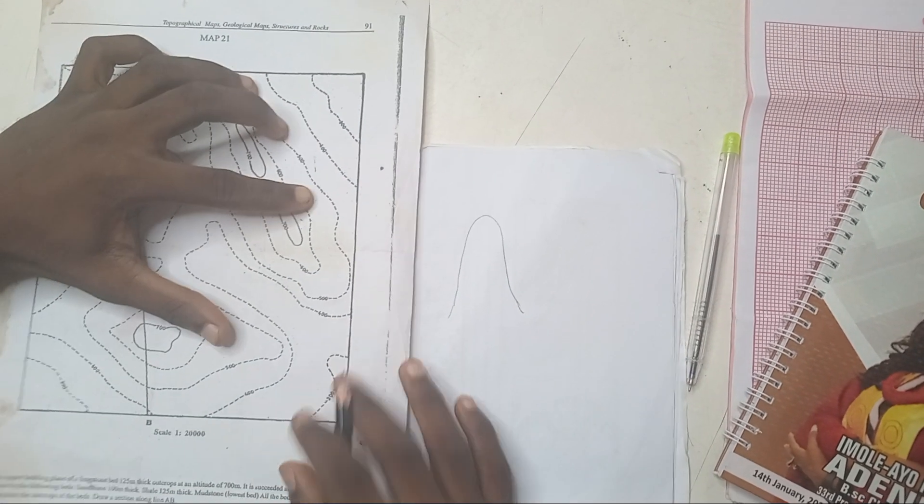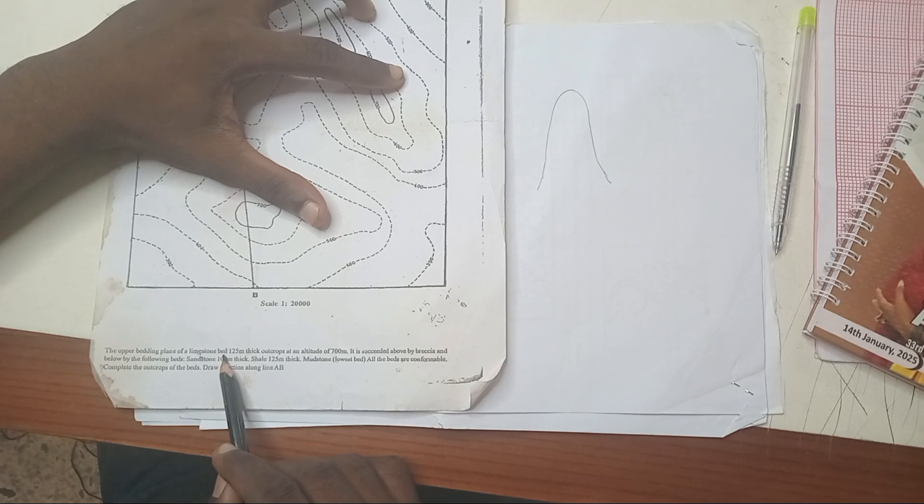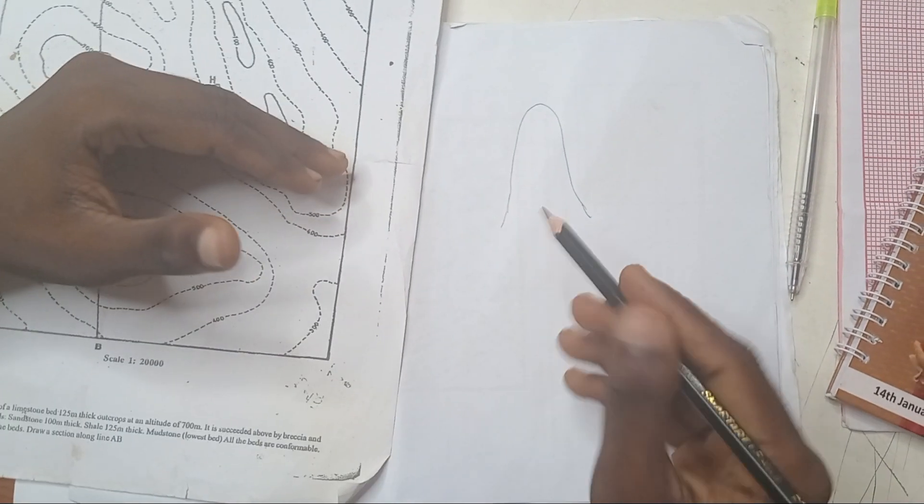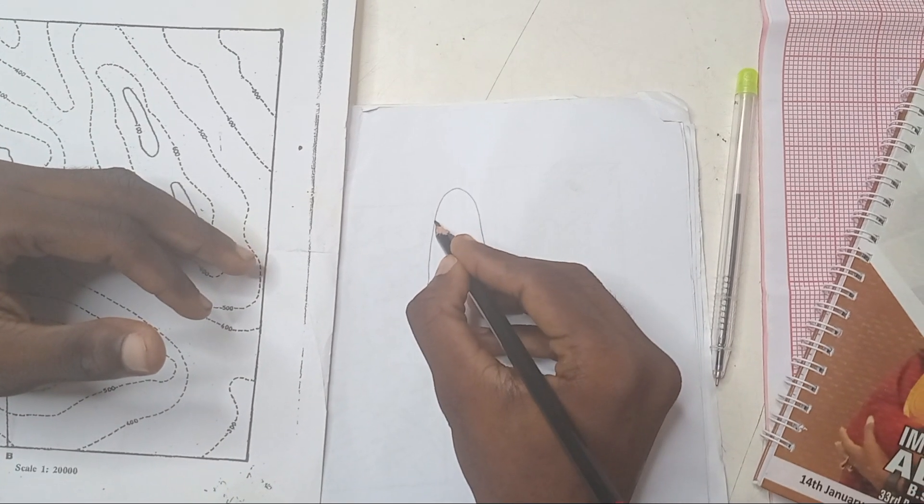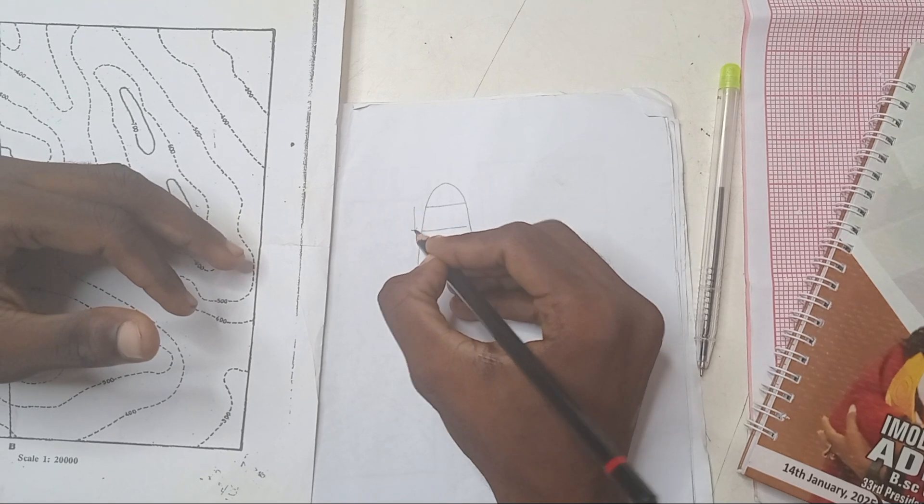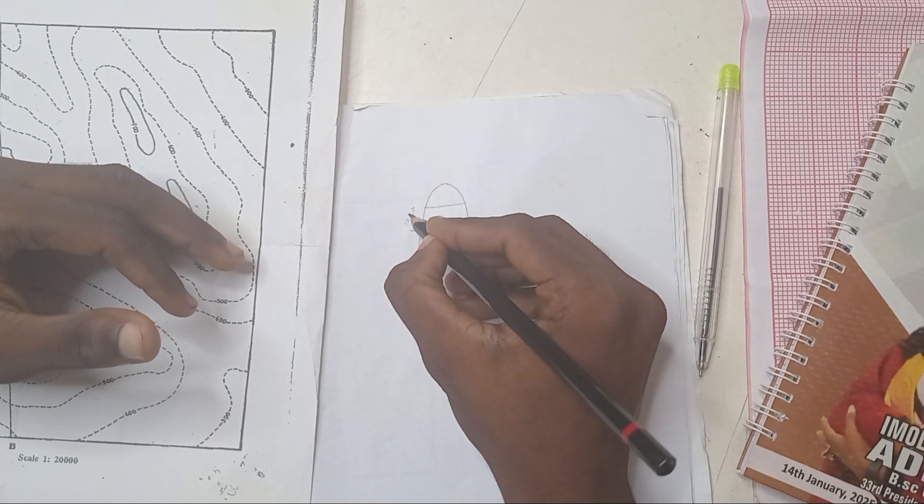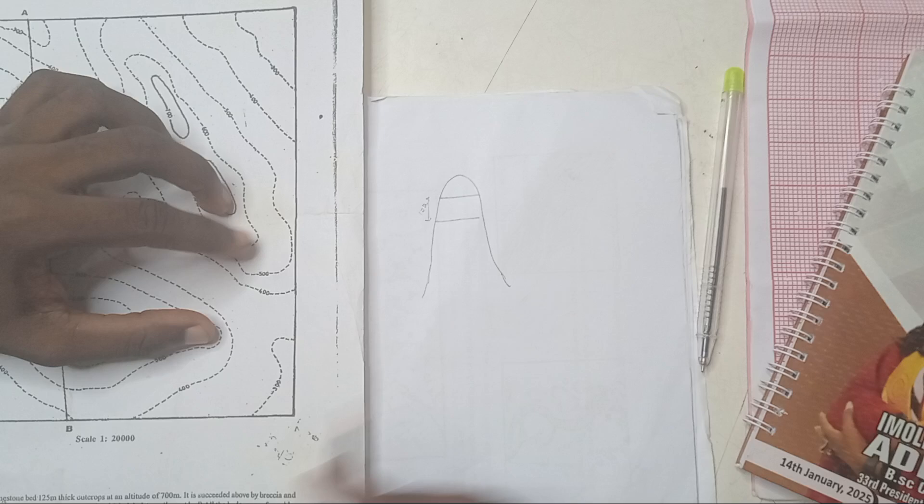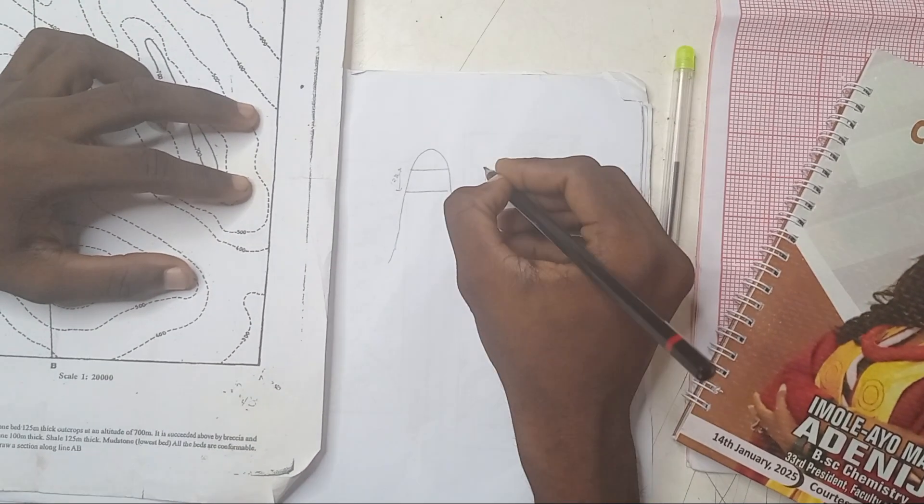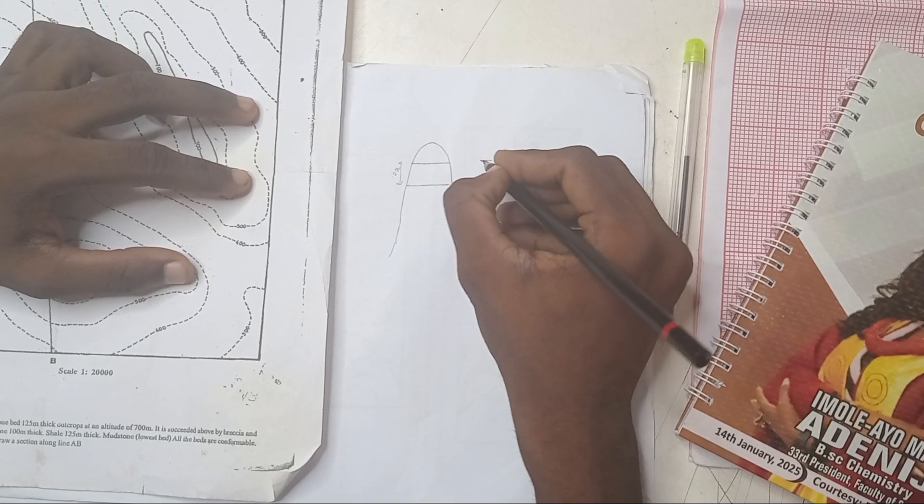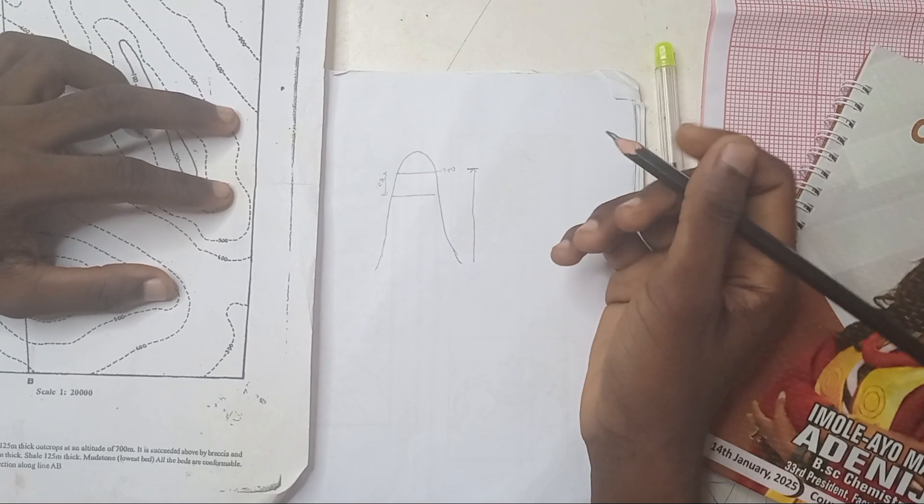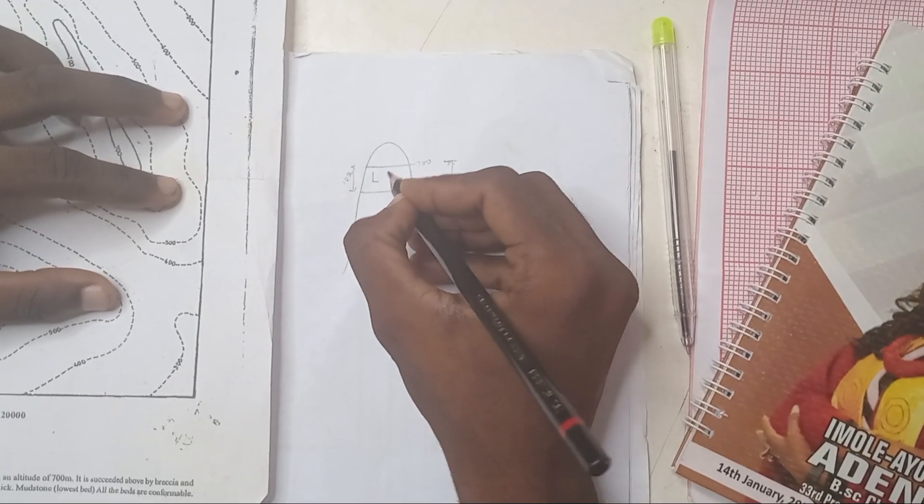The first bed that was mentioned is what? Limestone and they say it's 125 meter thick. So let me just say this is limestone and it's 125 meter thick. And it says it's an altitude. You know when it's an altitude, it means that that is where the height is, right? So where it is found, where that height is, is 700. That's where limestone starts from.